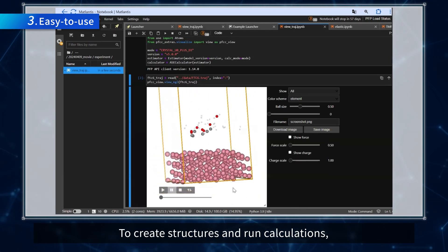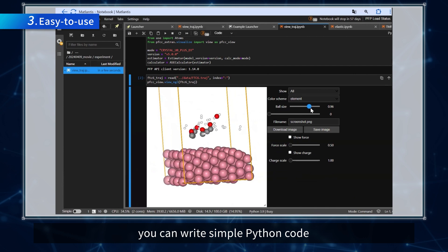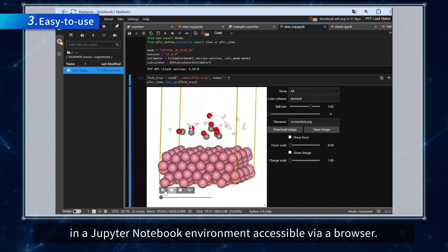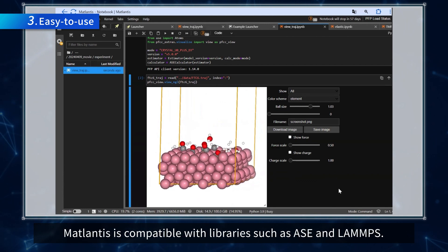To create structures and run calculations, you can write simple Python code in a Jupyter notebook environment, accessible via a browser. Matlantis is compatible with libraries such as ASE and LAMPS.